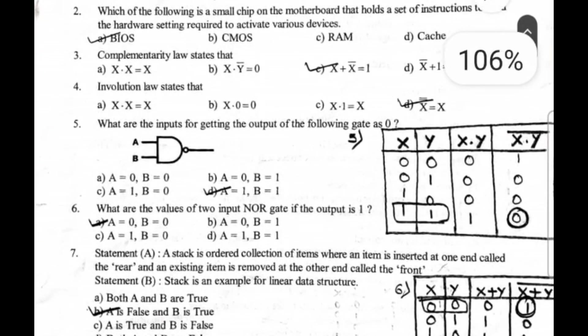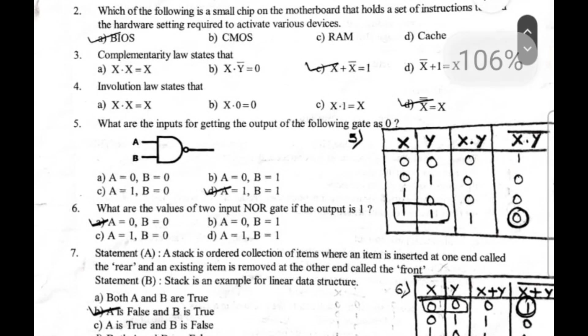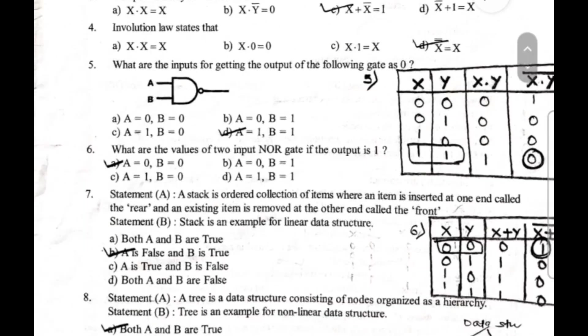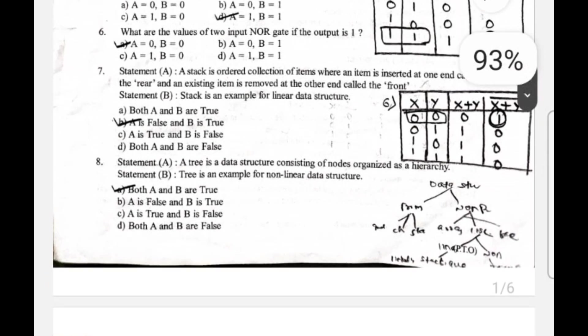Seventh question, statement A: a stack is ordered collection of items wherein item is inserted at one end called the rear and an existing item is removed at the other end called the front. Statement B: stack is an example for linear data structure. The correct answer is option B - A is false and statement B is true. Eighth question: the answer is option A, both A and B are true.